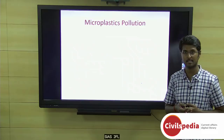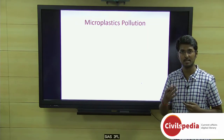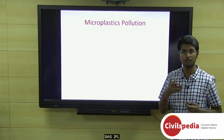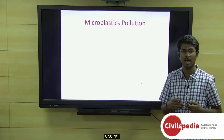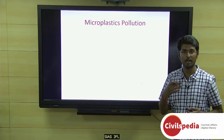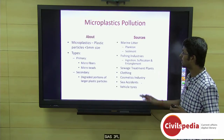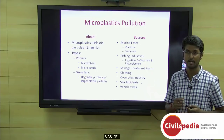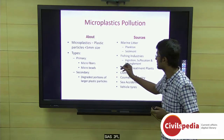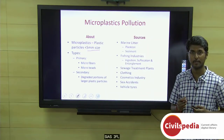Let's move on to our next topic: microplastics pollution. Under this topic, we will look at what microplastics are, possible sources and impacts of microplastic pollution, government initiatives taken, and a way forward. Microplastics are basically plastic particles less than 5 millimeters in size, and there are two types: primary and secondary microplastics.